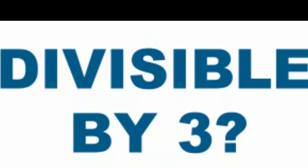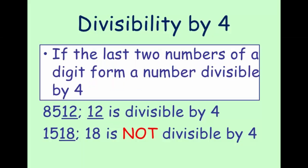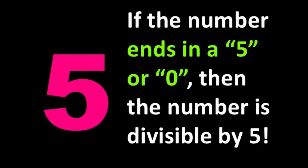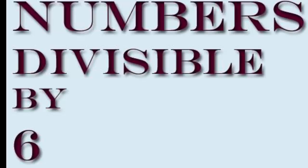Add the digits to see if it's divisible by three. Divide the last two digits by four, and you'll get four for sure. If it ends with five or zero, it makes five a hero. If you got two and three, you'd get six for free.